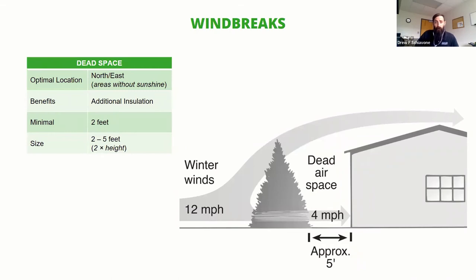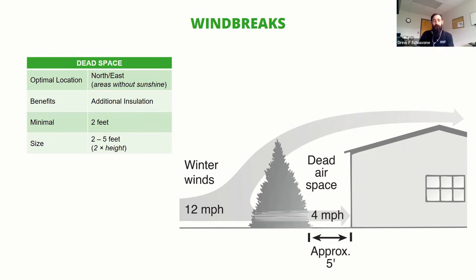One other aspect is creating a dead air space. For those with smaller yards, you're going to pull those trees and shrubs closer to the house to block the wind. You don't want to get so close that you're trapping moisture against the wall. But typically more than two feet — maybe five feet — of space creates a dead air space between the wall and the tree, which is like an extra layer of insulation. It protects and conserves heat within your home so it's not being cooled down as much.